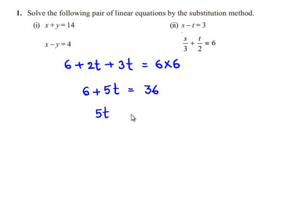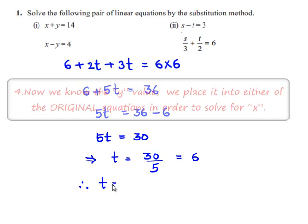Transposing 6 to the right hand side, we get 36 minus 6. So 5t equals 30, that implies t equals 30 divided by 5, which is 6. Therefore, we found the value of t as 6.